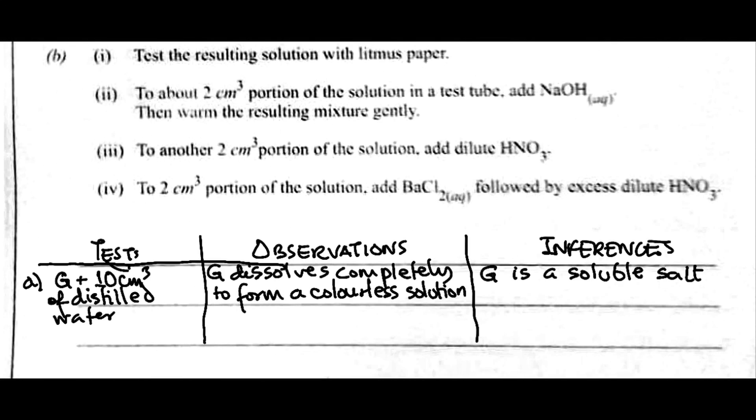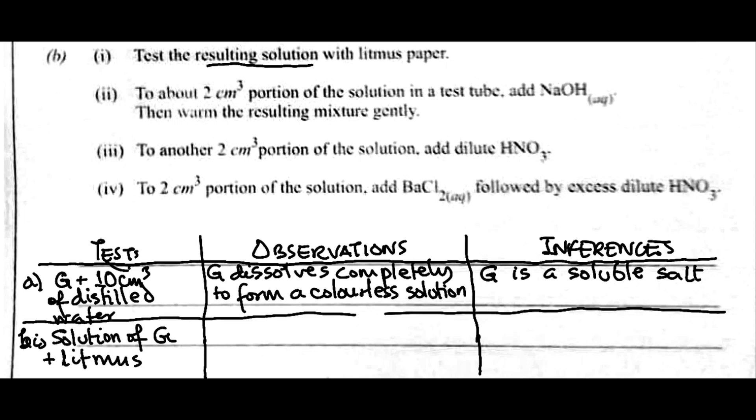The next test, remember, you always use your ruler to rule your lines so that your work will be neat. The next test, we are asked to test for the effect on litmus. So, B.I. The effect of G on litmus. So, B.I. here. It says solution, resulting solution. So, we are going to say solution of G because G is a solid. Solution of G plus litmus. G, that's ammonium trioxocarbonate(IV), is a salt of a weak base and a weak acid.